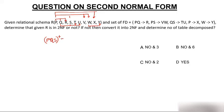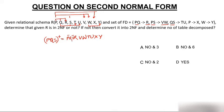Finding the closure of PQS: start with PQS. Using PQ→R, add R. Using PS→VW, add V and W. Using QS→TU, add T and U. Using P→X, add X. Using W→Y, add Y. So with PQS you are determining all attributes of the table. Therefore 100% PQS is the candidate key, and only PQS is the candidate key.